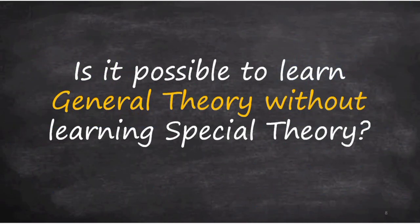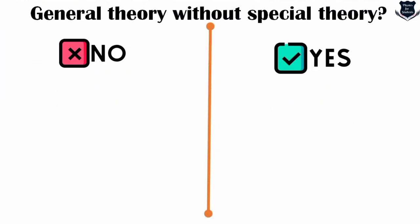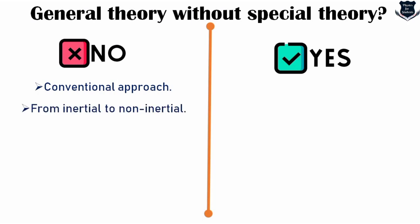A question that might occur to your mind: is it possible to learn general relativity without learning special theory? There might be two answers — no and yes. The 'no' answer follows the conventional approach: any tutor or book will say you need to learn special relativity first, because from inertial frames it moves to non-inertial frames and understanding would be much better. You need to understand the basics — Lorentz transformations, frames of reference — first.